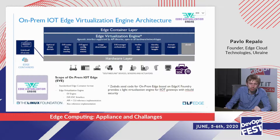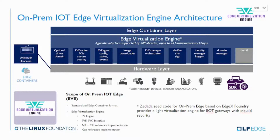Looking under the hood of Edge Virtualization Engine: here we have a hardware abstraction layer and a number of services helping us maintain the platform — image downloading service, configuration management, agent management, network security, network overlay with access lists and other security things, specific hardware driver management, all these things. Below the hardware layer there are single-purpose sensors or whatever you could imagine.